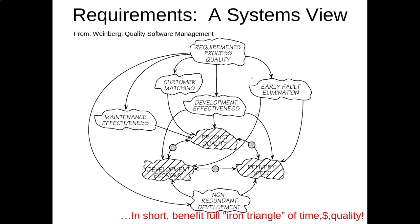Does anyone recognize this? It's the iron triangle. It turns out that if you've got your requirements wrong, it affects each of these things. Why product quality? If you're a stakeholder and requirements are off, it affects your sense of product quality because the requirements should directly reflect what the product is. You may build the system right, but you haven't built the right system. You give a stakeholder a system that isn't the one they wanted.